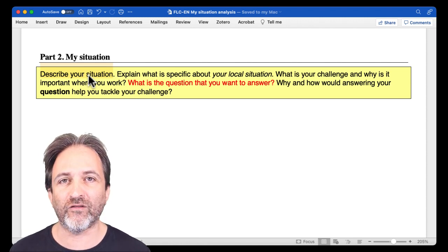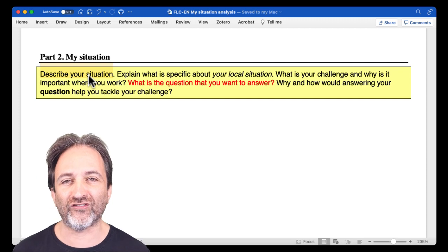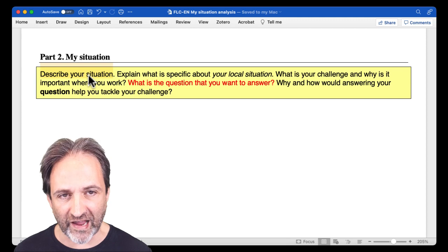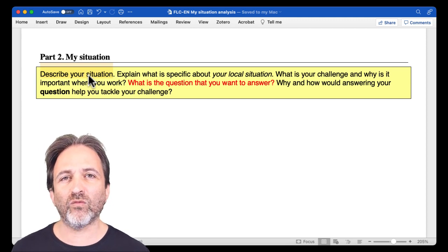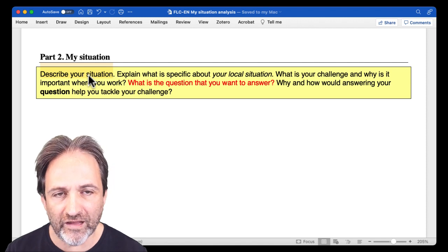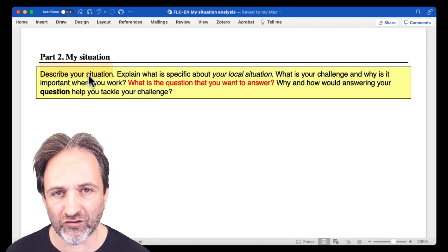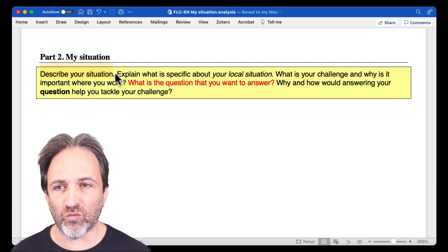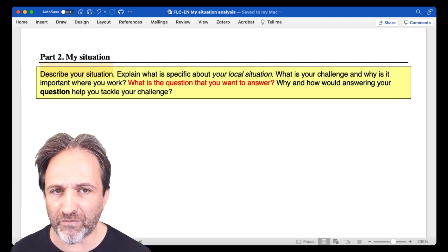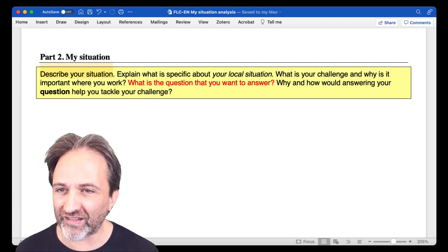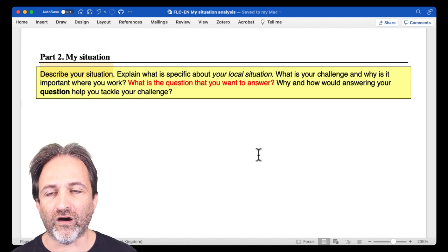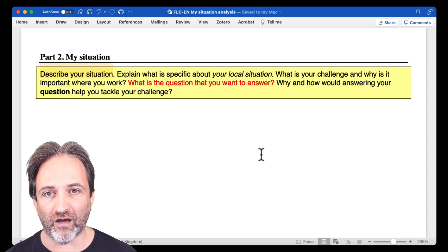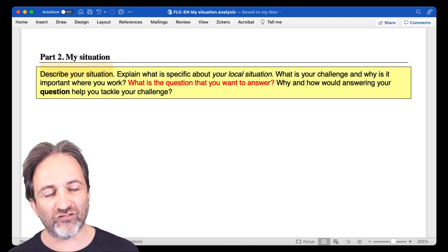If you're going to share a piece of information, make sure you can answer as many of those questions as you are able to, to get really specific. What is your challenge? And why is it important where you work? And so when you describe your situation, how is the piece of information you're sharing about the situation relevant to your challenge? Why does it matter in relation to the question that you want to answer?